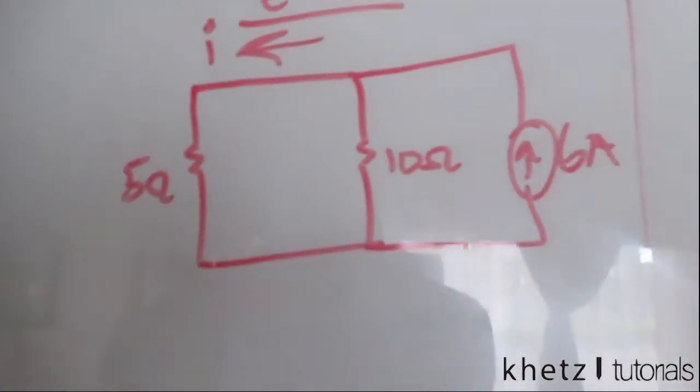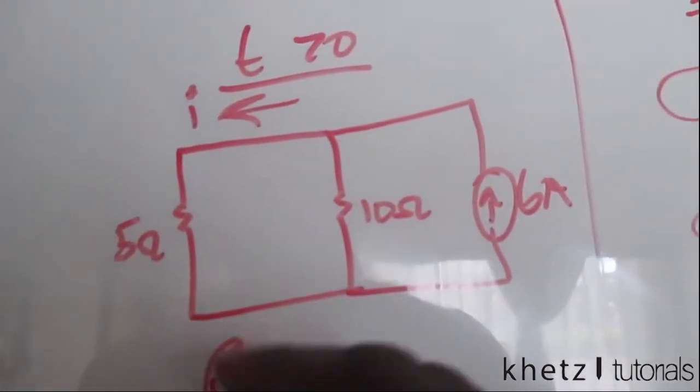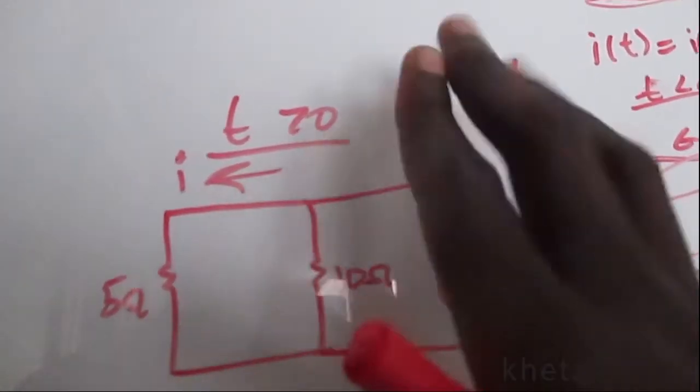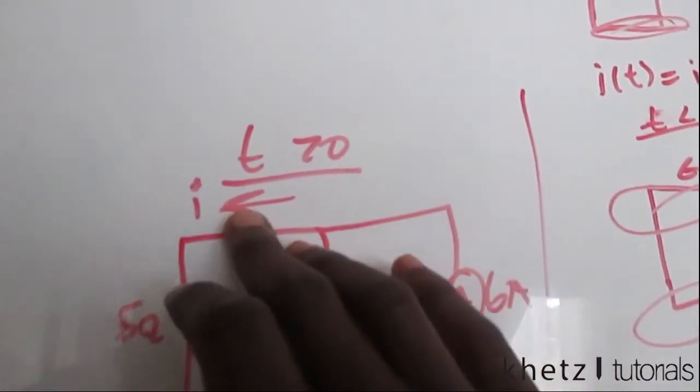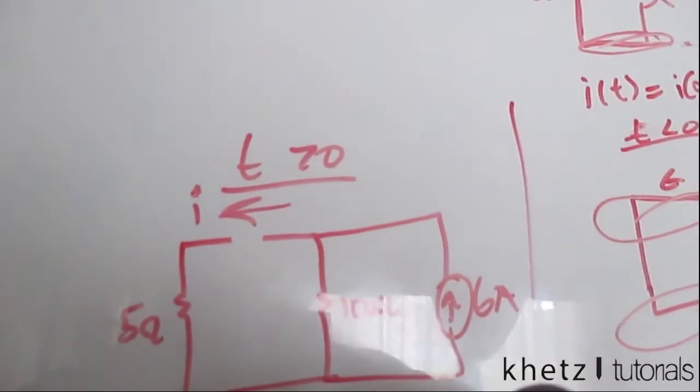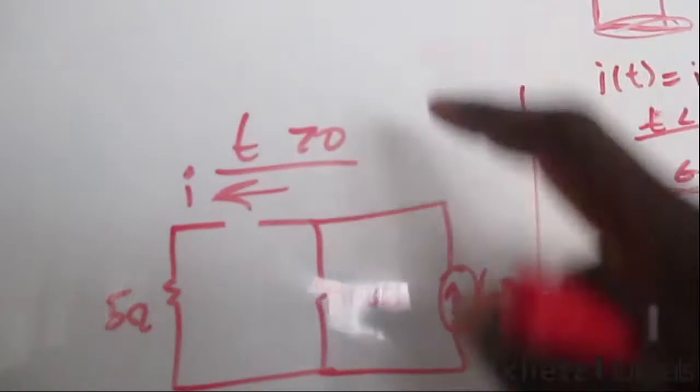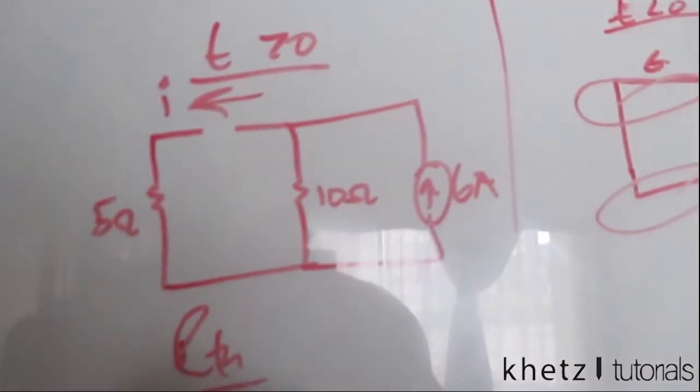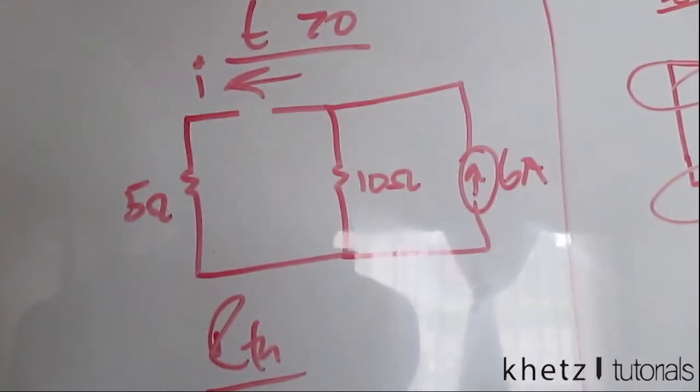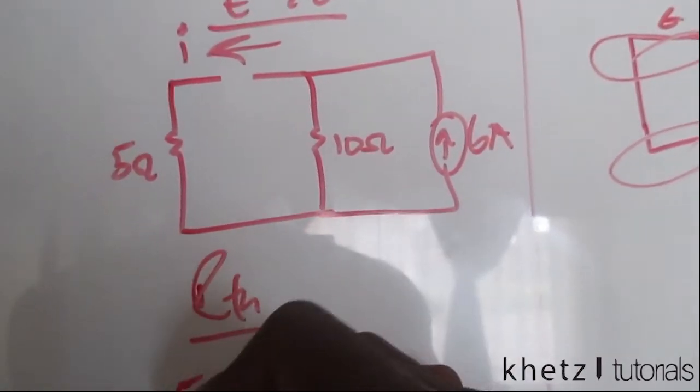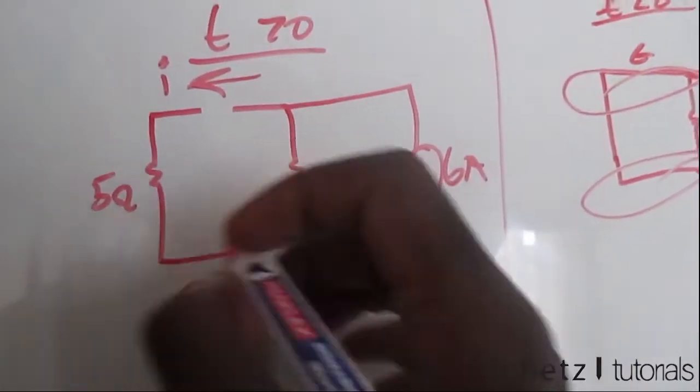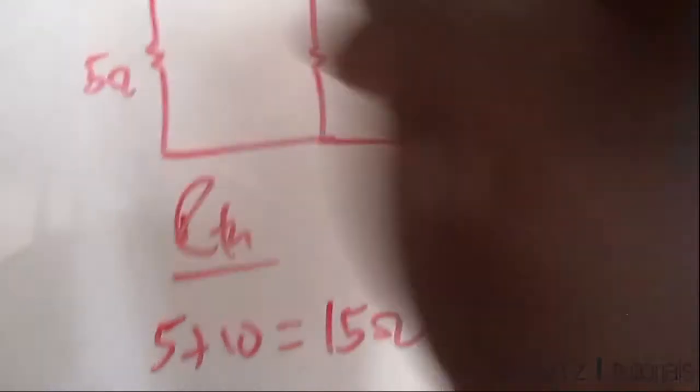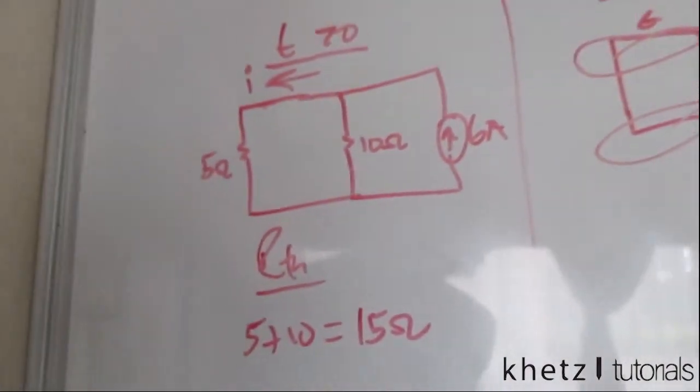We can now find our Rth with respect to the storage element. We take out the independent source, so we open that to find Rth. If we check this out, which is going to be an open circuit, we have Rth equals 5 plus 10 because this would be in series, so 5 plus 10 which is 15 ohms.